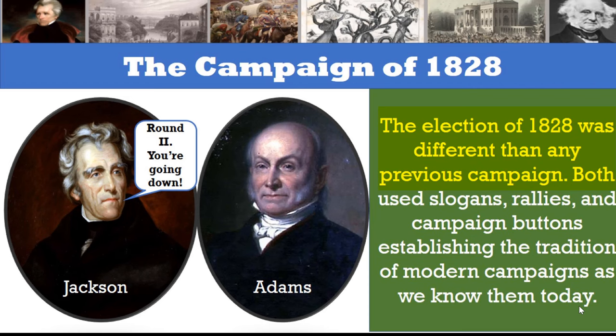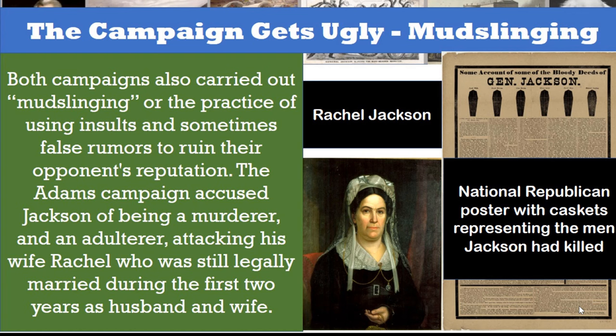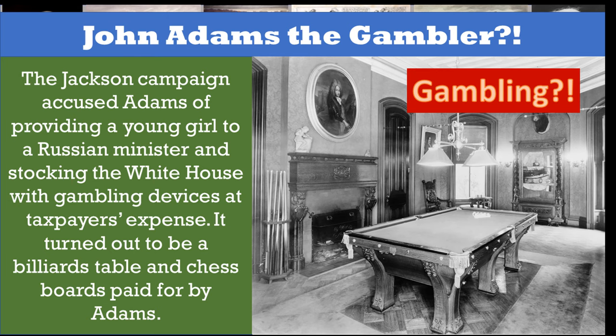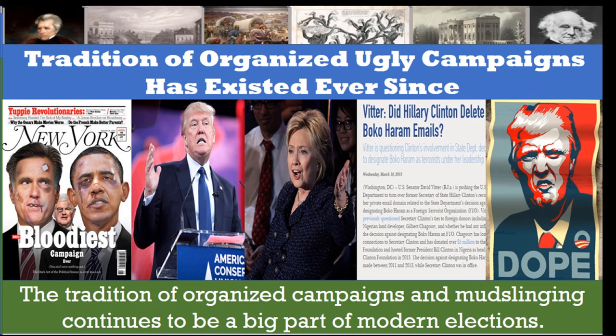The election of 1828 was different than any previous campaign. Both sides used slogans, rallies, and campaign buttons, establishing the tradition of modern campaigns as we know them today. Both campaigns also carried out mudslinging — the practice of using insults and sometimes false rumors to ruin their opponents' reputation. The Adams campaign accused Jackson of being a murderer and an adulterer, attacking his wife Rachel, who was still legally married during their first two years as husband and wife. The Jackson campaign accused Adams of providing a young girl to a Russian minister and stocking the White House with gambling devices at the taxpayers' expense — which turned out to be a billiards table and chess boards paid for by Adams. The tradition of organized campaigns and mudslinging, or what we call today attack ads, continues to be a big part of modern elections and can be traced back to this election of 1828.